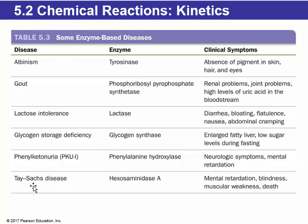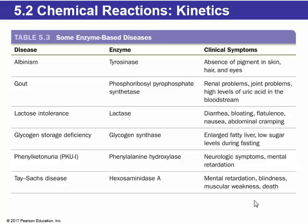For example, Tay-Sachs disease is caused by a defect in the hexosaminidase A enzyme, and that can result in mental retardation, blindness, muscular weakness, and eventually death.